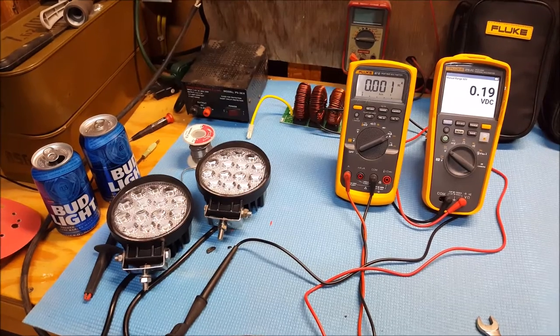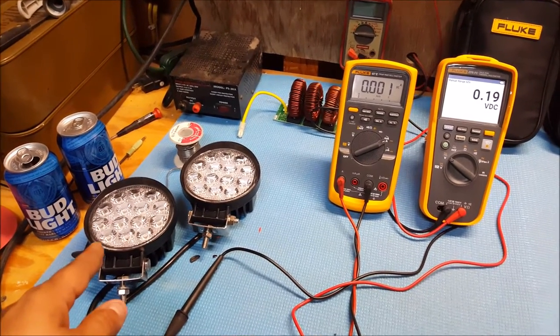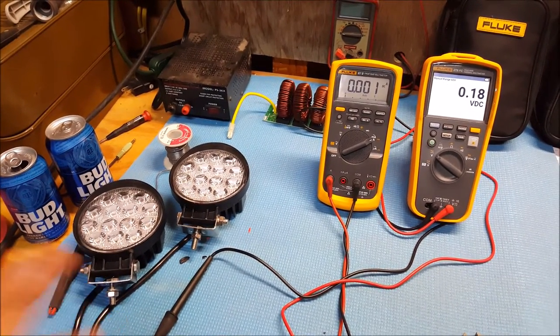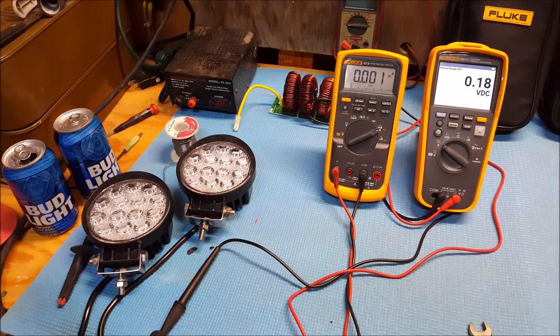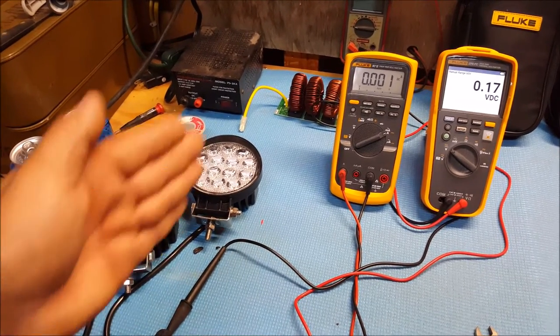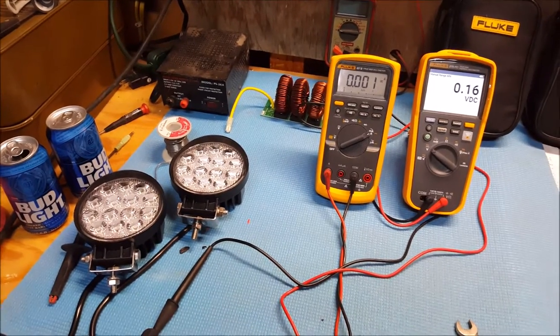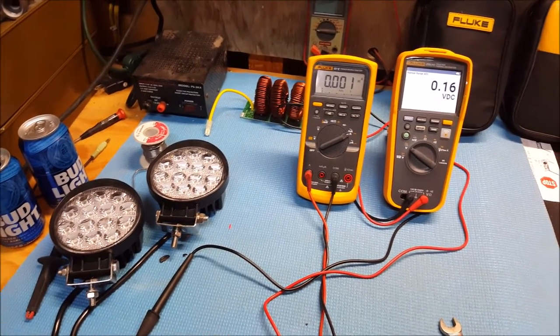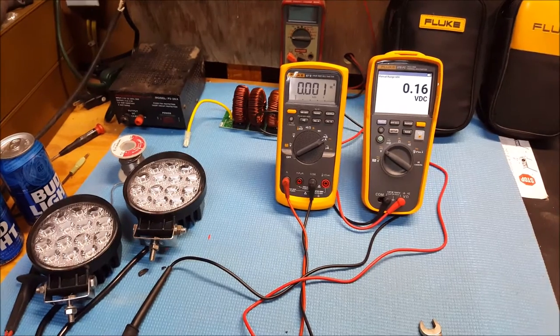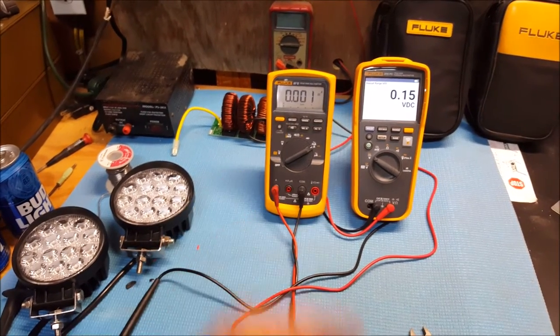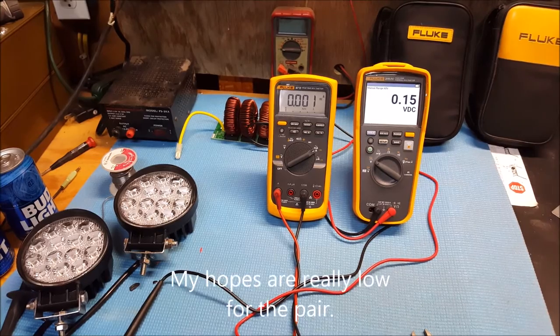All right guys, well I went ahead and installed my second spotlight here, which is the same output, or rated the same 42 watts, 42 watts, 12 volts. You know, you get the story here. But we're gonna see what the meters pick up, and I have a good feeling this one on the left is gonna be reading about three amps or maybe even 3.2 amps.